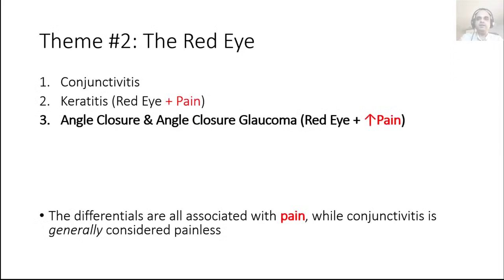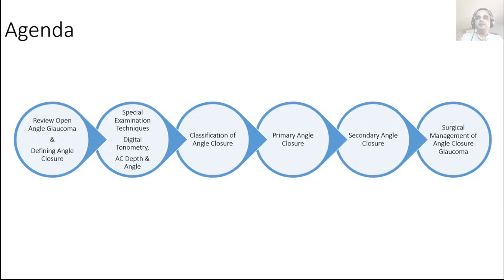This is our third differential of the red eye theme and this is the diagnosis which produces the most pain. In fact, the third worst type of pain a patient can experience is the pain of angle closure — a specific type of angle closure that we'll cover. The other two types of pain are myocardial infarction and mesenteric ischemia or gut ischemia.